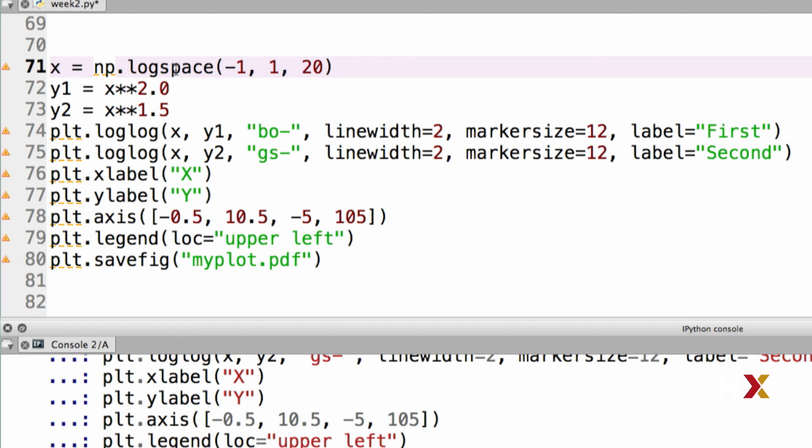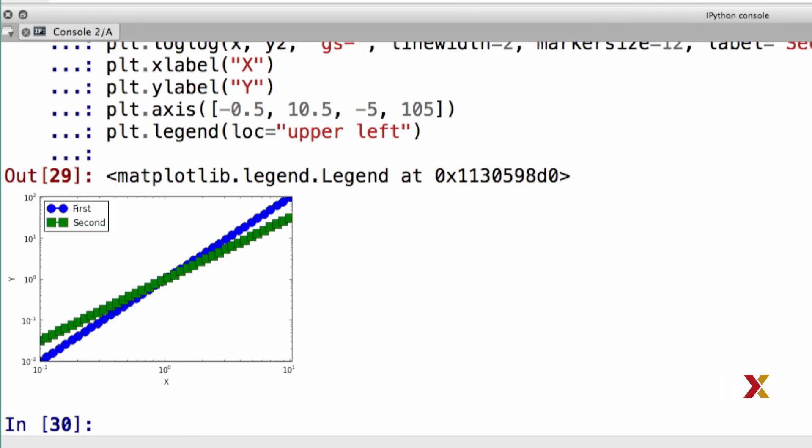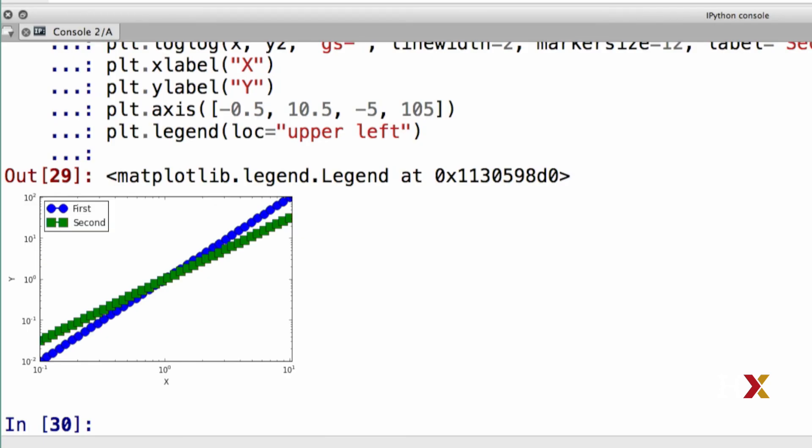In this case, I'm going to modify the number of points. Let me go with 40. We can now rerun the plot, and here we see the result of using logspace. In this case, all of the points along the x-axis are evenly spaced.